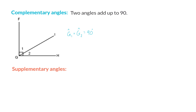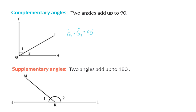Supplementary angles are two angles that add up to 180 degrees. Here we have two angles on a straight line, so we know that angle K1 plus K2 will equal 180 degrees, which means they are adjacent supplementary angles.